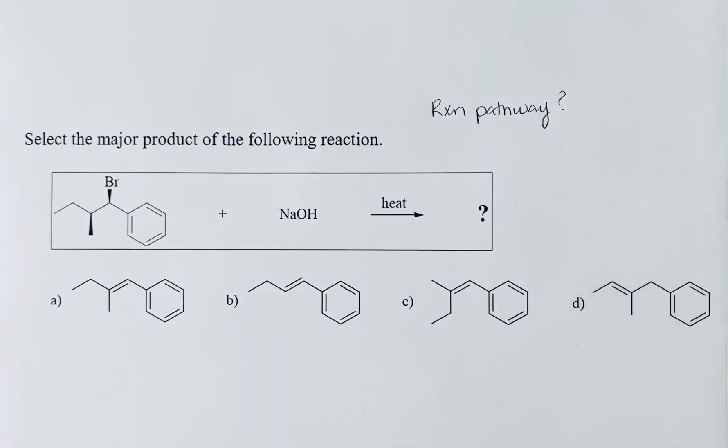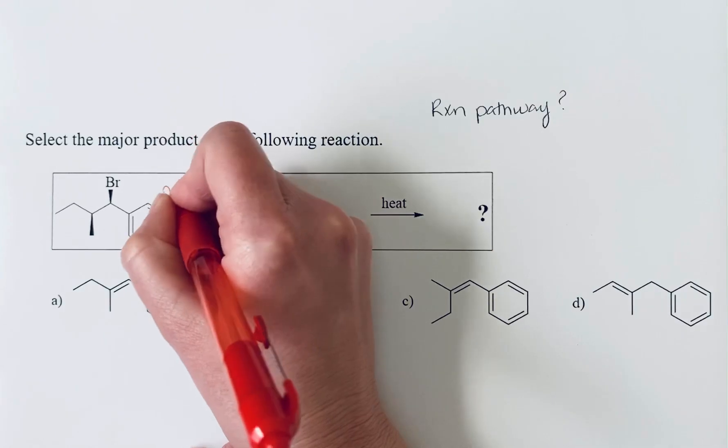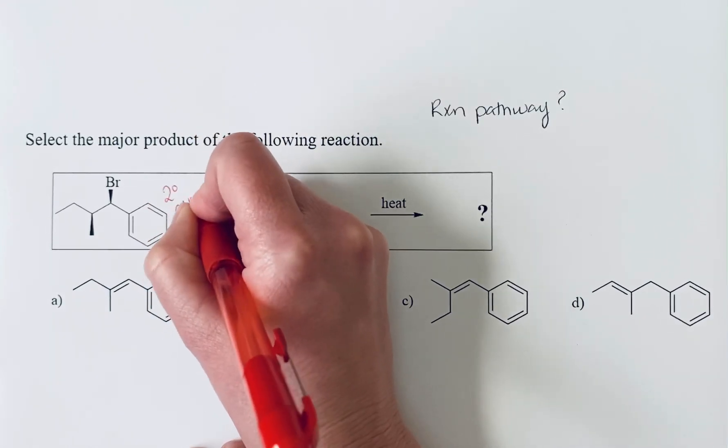want to do if we're trying to decide the pathway is look at the structure of the alkyl halide. We see that we have a secondary alkyl halide.